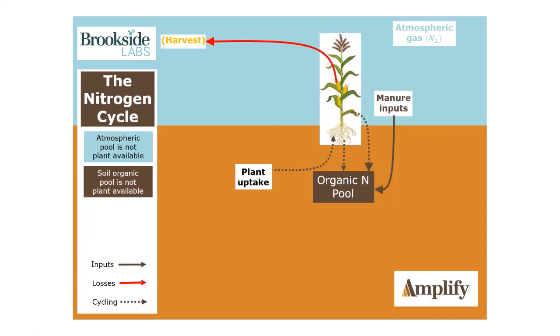Previous to World War II, before we had the Haber-Bosch process that could make inorganic fertilizers — which is a really interesting story worth reading about — everything was manure inputs. Our nitrogen was either green manures from cover crops or legumes, or actual livestock manure inputs. And as we know, most of that nitrogen in manure is in the organic pool, but we can still see a disconnect between plant uptake and the largest pools in the atmosphere and the land.